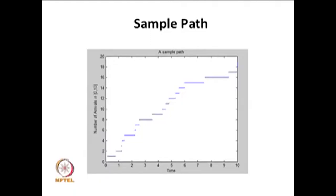This is one sample path over the time from 0 to 10, showing the number of arrivals in the interval. When one arrival occurs, N(t) is incremented by 1 and holds that value until the second arrival occurs, then increments to 2, and so on. Looking carefully at the sample path, the increment is always by 1 over time — there are no 2 or more arrivals in a very small interval of time. The inter-arrival times are exponentially distributed with parameter lambda, as chosen for this sample path. This is the way the sample path of the Poisson process looks.